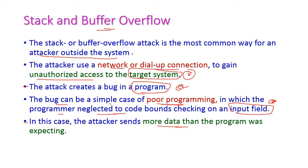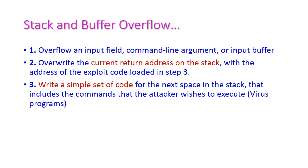The attacker sends more data than the program was expecting, causing the stack or buffer to overflow. For this, the attacker follows three steps. The first step is to overflow the input field, command line argument, and input buffer — everything is overflowed — and overwrite the current return address of the stack. Once the stack is overflowed, the current return address will be changed with the address of the exploit code loaded in step 3.